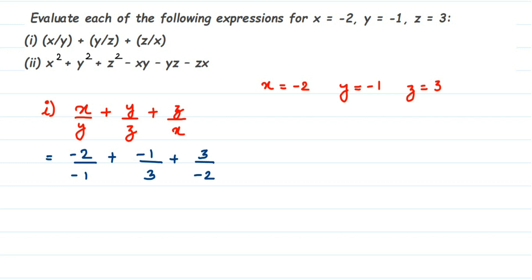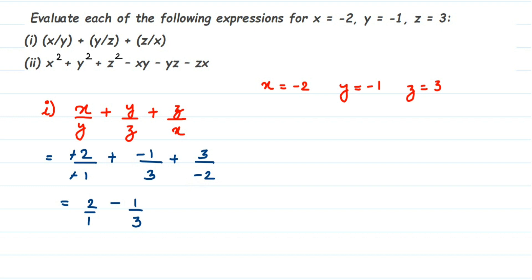In the first term, minus over minus cancels, so it becomes 2/1, or simply 2. Then plus and minus becomes minus, so we get minus 1/3. The last term has minus over minus in the denominator, which makes the whole number negative, so it becomes minus 3/2.